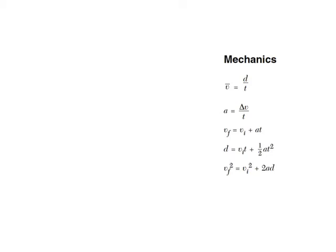A formula — and I have five of them here — is just a relationship between variables. I know it looks like there's a lot of letters, but really there are basically four, although some of them have a couple different flavors. The four variables are distance, velocity, acceleration, and time.